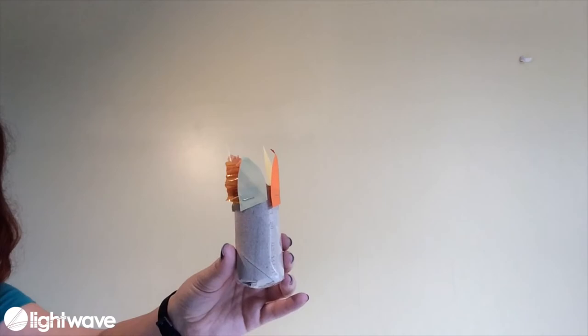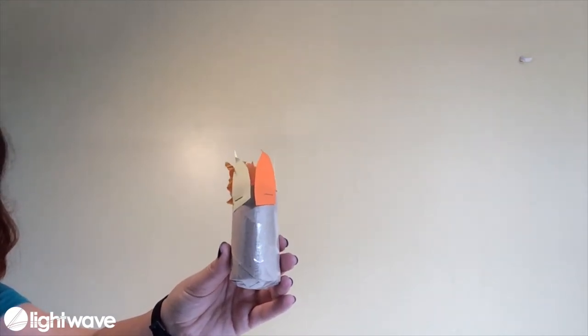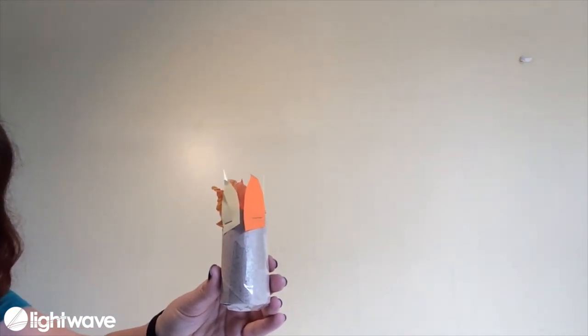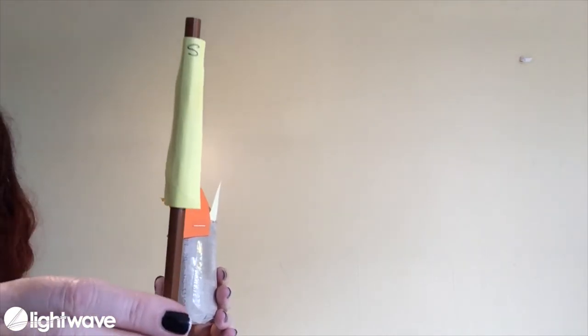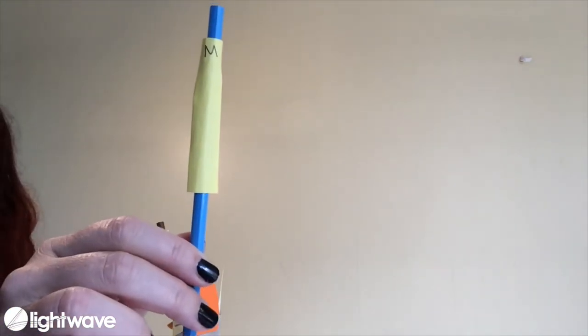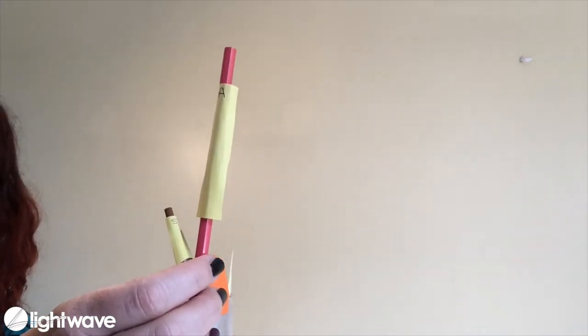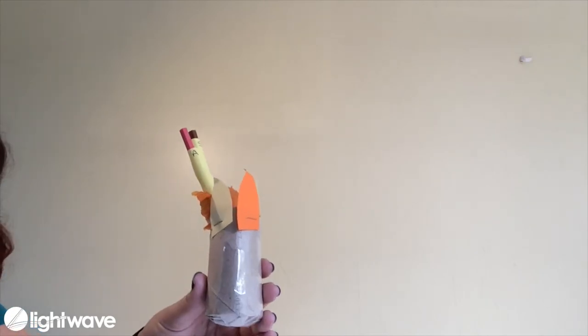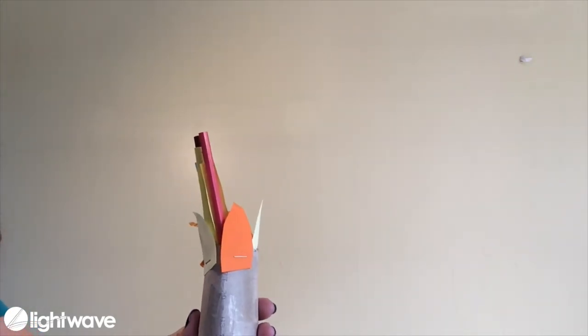Now I need to add Shadrach, Meshach and Abednego. I've used pencils with post-it notes on with their initials. So there we have Shadrach, Meshach and Abednego all going into the fiery furnace and they're being unaffected by the flames.